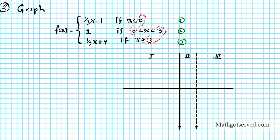Let's start with function number one. Function one is f(x) equals one-third x minus one. This line has a slope of one over three, which means we're going to rise one and run three. We're starting from the y-intercept negative one. So we start from negative one, rise one and run three, or we can go down one and back three. Those points define my first function.